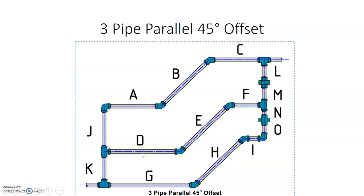The bottom spread doesn't have to be the same distance as the top. Between pipe D and G it could be a spread of six inches center-to-center. We want to maintain that all the way through to the two travel pieces — between E and H we maintain that same six inches, and after that going horizontal again between F and I we maintain that same six inches all throughout the offset.